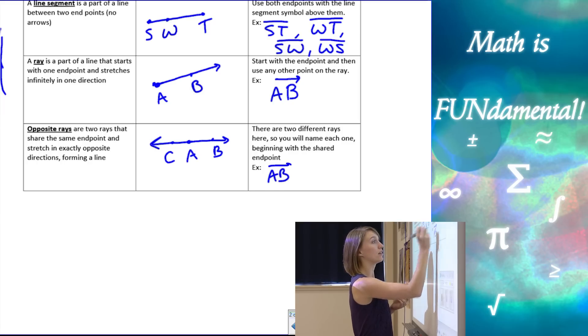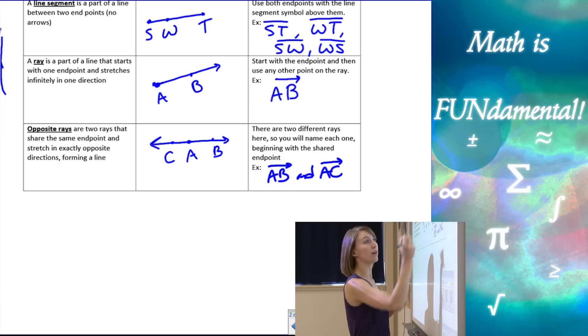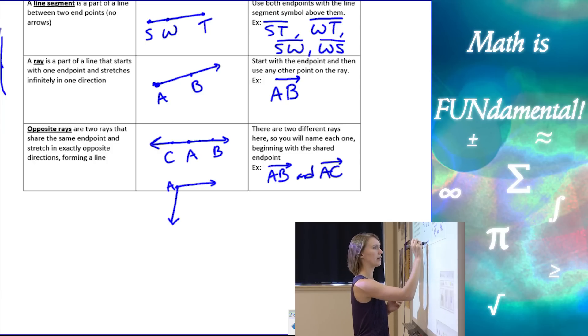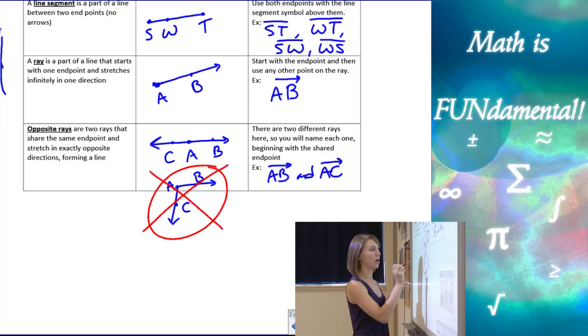We always want to name both of the rays. So you're going to have two rays in this case, and you want to make sure that they really do go in opposite directions. Let me show you an example of rays that are not opposite rays. These rays don't go the same direction, but notice they don't make a straight line. So these would not be opposite rays. You want to make sure they really make that straight line.